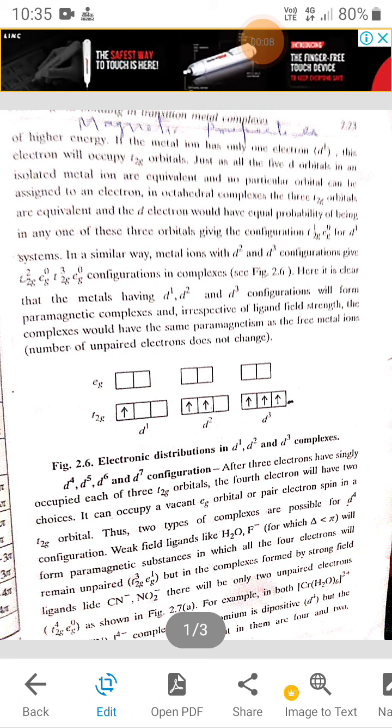The magnetic properties are based on the number of unpaired electrons present in the complex. Electronic configuration is also related to the magnetic properties. In D1,